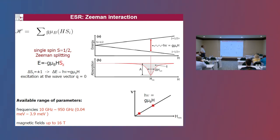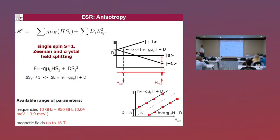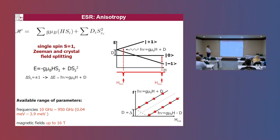In cases where the system is more complex — for instance, if it has some anisotropy — the ESR response becomes more complicated. Even in the absence of a magnetic field, some particular spin states have lower energies than others, corresponding to the opening of an anisotropy gap. Instead of a single line, one observes two lines. If one measures these signals at different frequencies, one obtains two resonant branches, and extrapolating them to zero magnetic field directly yields the excitation energy in the spin system.